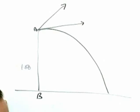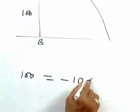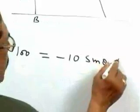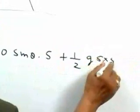Now resolving along the horizontal as well as the vertical, you will be having 100 equals minus 10 sin theta into 5 plus half G 5 into 5.